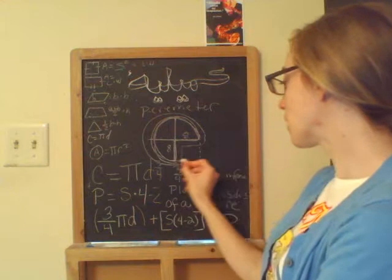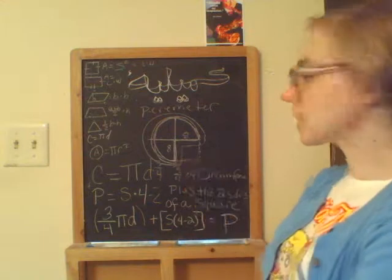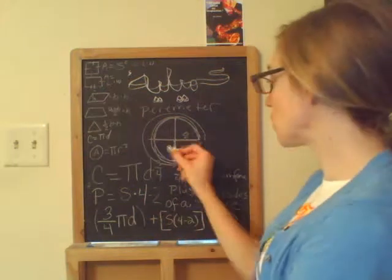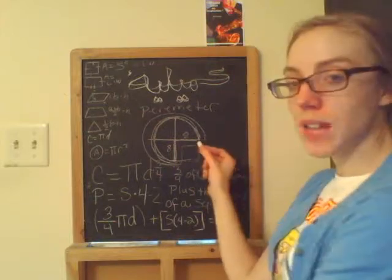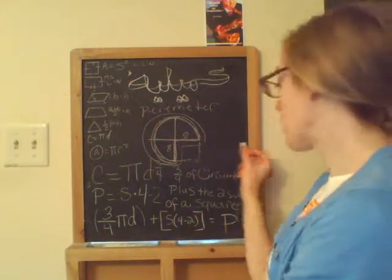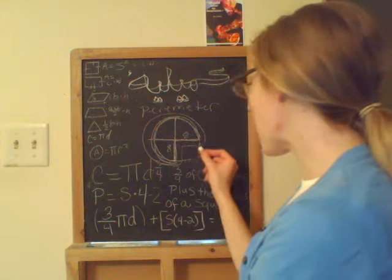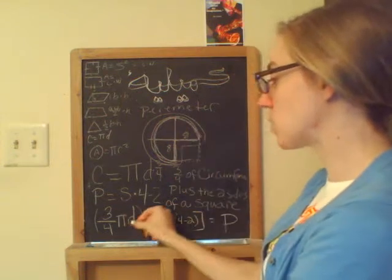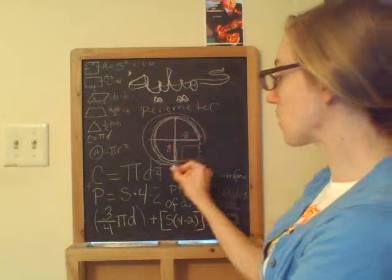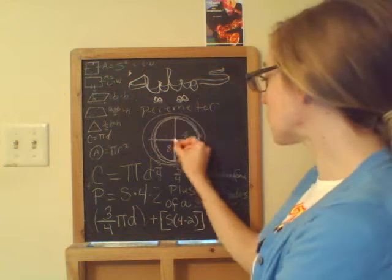And then now, we want to also add to this distance here, which is three-fourths of pi d, which is three-quarters of the circumference, plus the two sides.